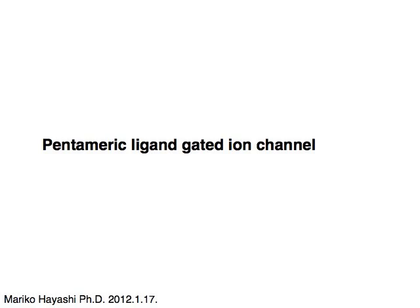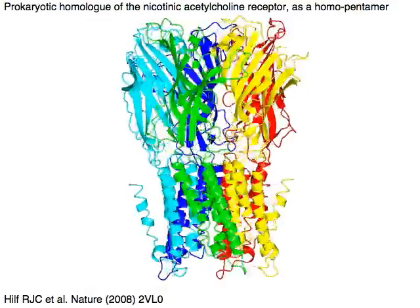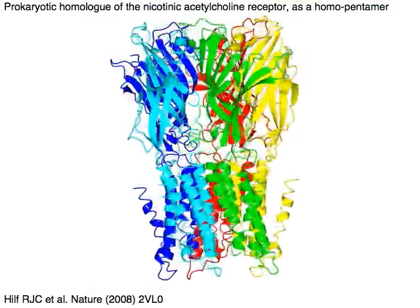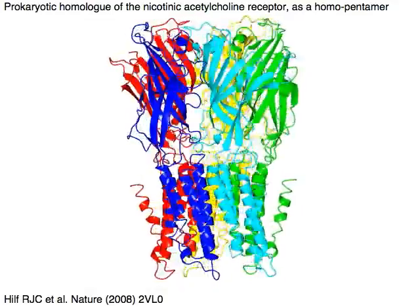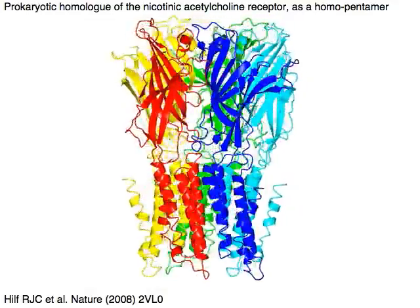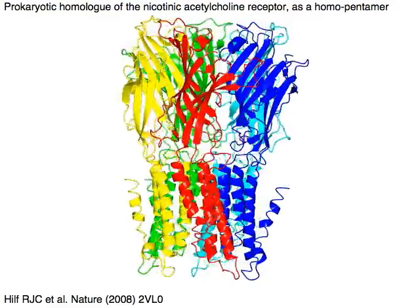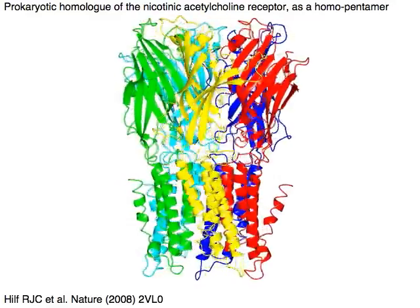Pentameric ligand-gated ion channel. Prokaryotic homologue of the nicotinic acetylcholine receptor, as a homopentamer. Gloeobacter violaceus ligand-gated ion channel.